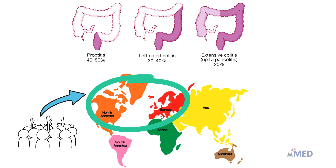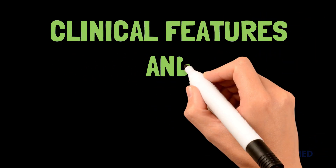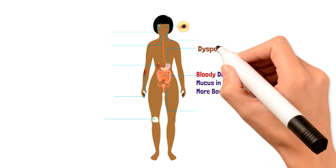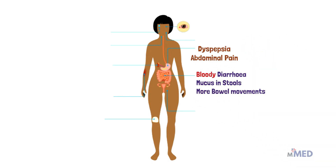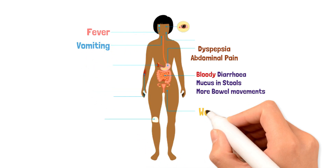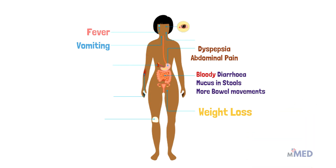Patients with ulcerative colitis almost always present with diarrhea, sometimes with blood, and mucus in stools. Bowel movements are frequent and small in volume due to rectal inflammation. They commonly present with abdominal pain, classically on the left side, reflecting the location of the distal sigmoid colon. Fever due to inflammation, vomiting due to abnormal bowel movements, and weight loss due to impaired digestion are also common.